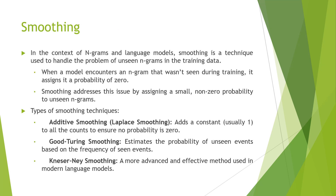Now let's discuss what smoothing is and why we use it. Smoothing is used to deal with the data sparsity issue in NLP. When working with large amounts of data there may be many unseen words in the training process, resulting in many zero values. To handle the data sparsity issue, we apply a mechanism to add one, for example, to all counts of words in the dataset, so we remove zero values from the data sparsity matrix.